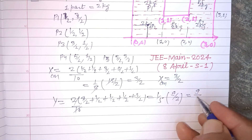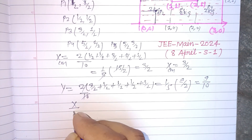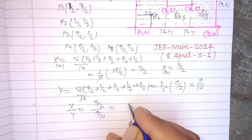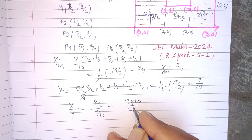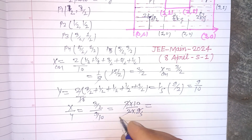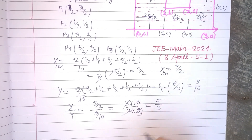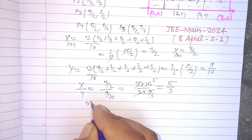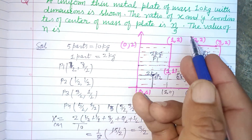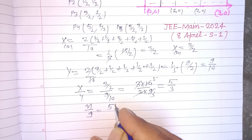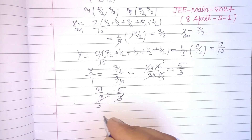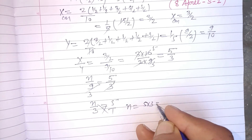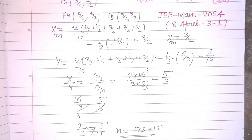So y-coordinate of center of mass is 9 by 10. Now x over y equals (3/2) divided by (9/10), which is 3 × 10 divided by 2 × 9 = 30/18 = 5/3. This is given as n/9, so n/3 = 5, and by cross multiplication n = 5 × 3 = 15. So 15 is the correct answer to this question.